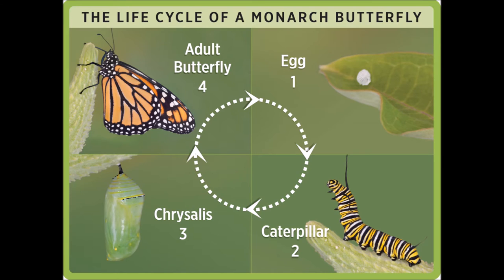A butterfly goes through four major stages of metamorphosis, which include egg, lasting 3–5 days; caterpillar, 5–10 days; chrysalis, 7–10 days; and butterfly, about 2 weeks.